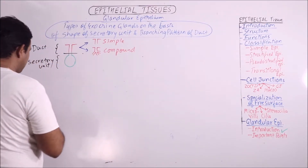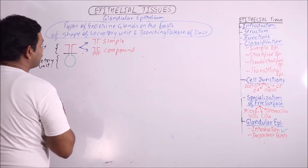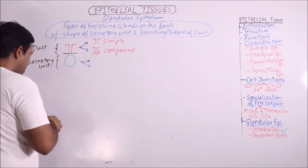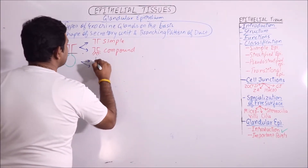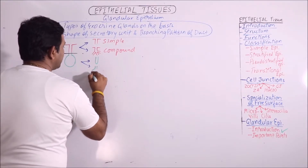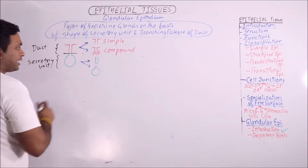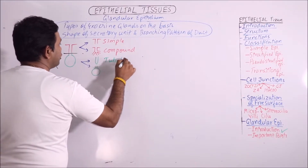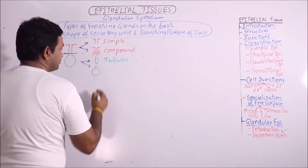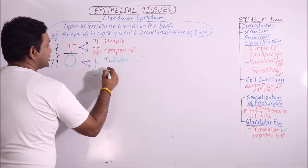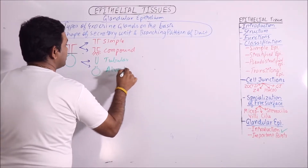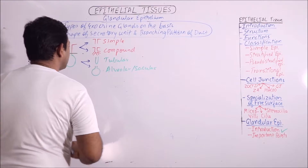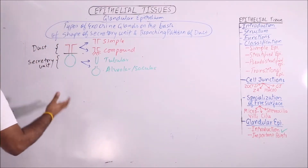The secretory units are also of two types. If they are elongated or dilated like a sac, the elongated type of secretory unit is said to be tubular, and if it is like a sac, it is said to be alveolar or saccular.